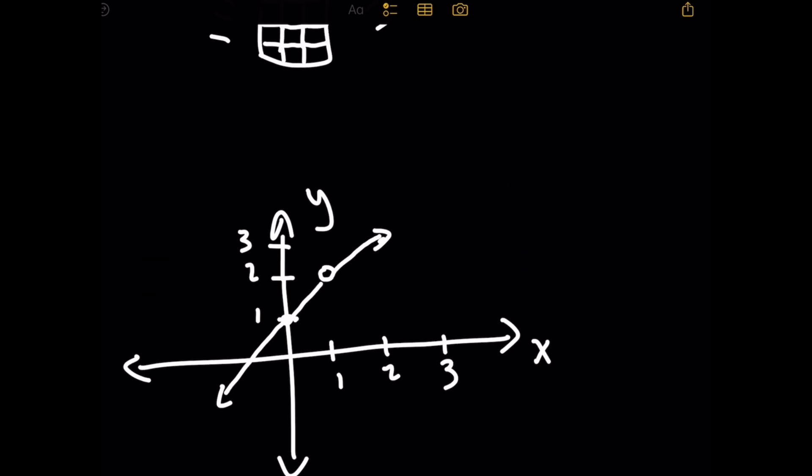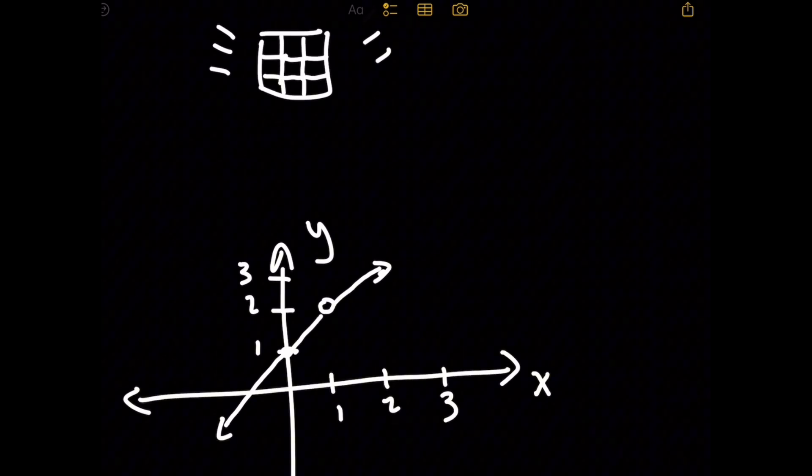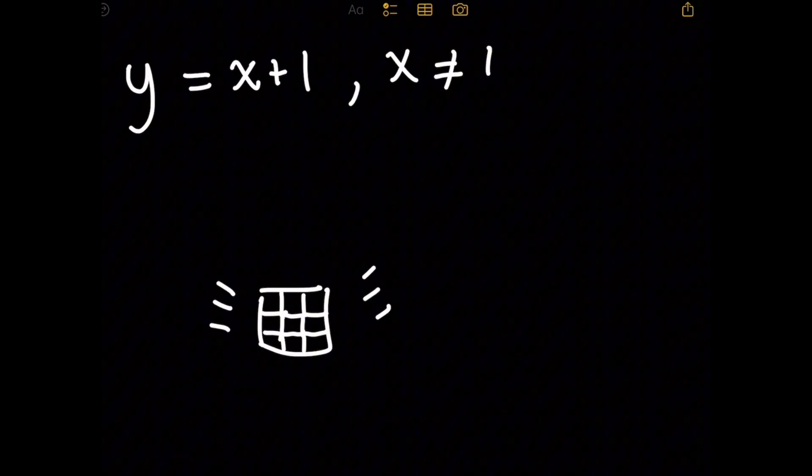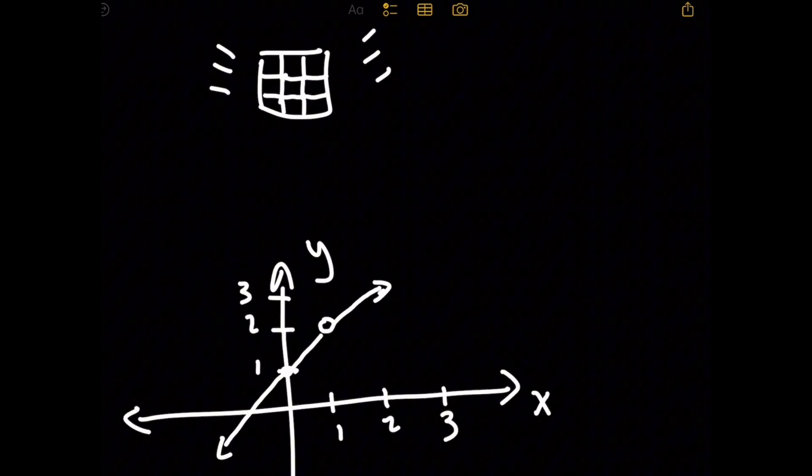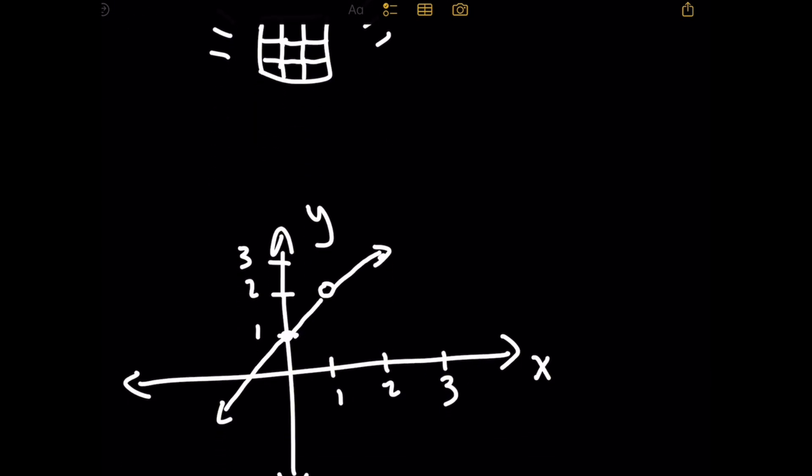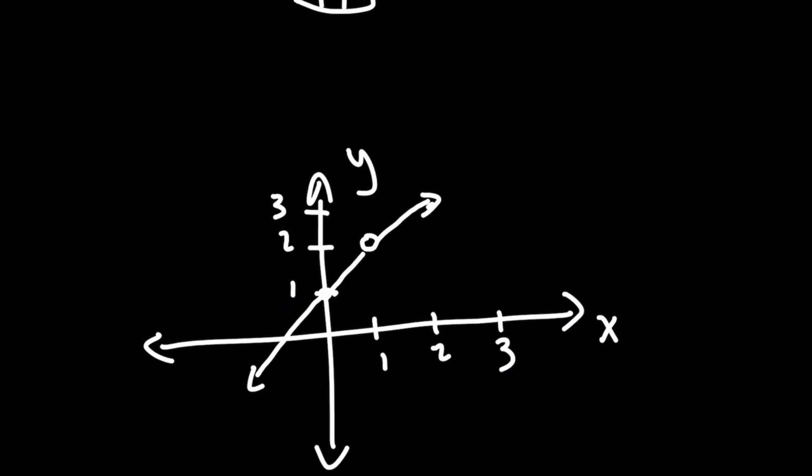But luckily for Mario, in this particular level, we have only point discontinuity, as shown here. Because for the graph, where after simplifying we have y equals x plus 1, it looks like your typical line, except this line happens to have a hole at the point 1, 2. Because if you remember, x cannot be 1. So now Mario needs to make a decision here. Can I place a brick at the hole? And does it really matter where I place the brick?